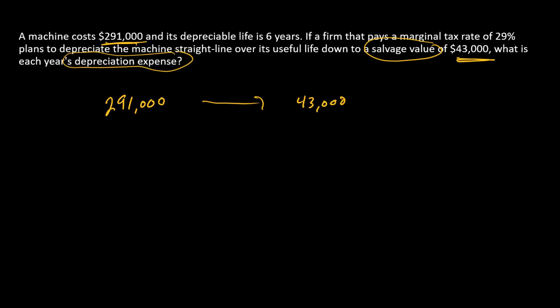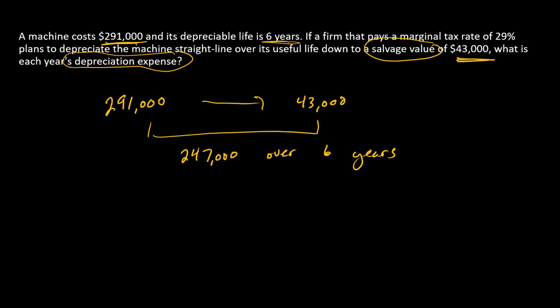We need the useful lifetime of the asset — here that's six years. The firm is going to be depreciating this asset by a total of $247,000 over six years. To calculate depreciation we also need to know the method of depreciation — the actual way this $247,000 is going to be divided up over the six years.